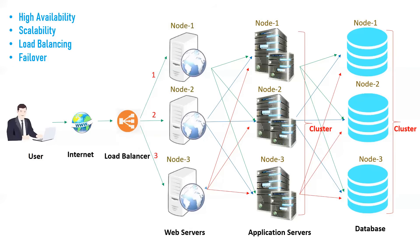Load balancing distributes incoming requests across web servers, application servers, and databases at every tier. Failover is the concept where if any node goes down, all sessions connected to that node must be transferred to another running node. For example, if a user is working on a website with their session connected to Node 1 web server and Node 1 application server, and Node 1 crashes, the user's data and session need to be transferred to a running node — that is called failover.